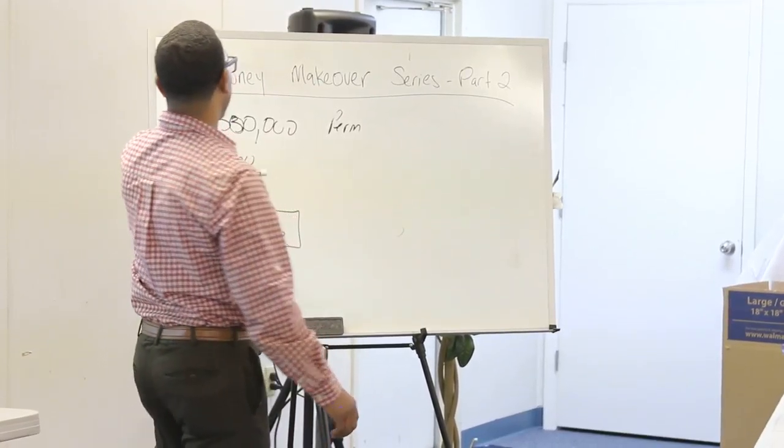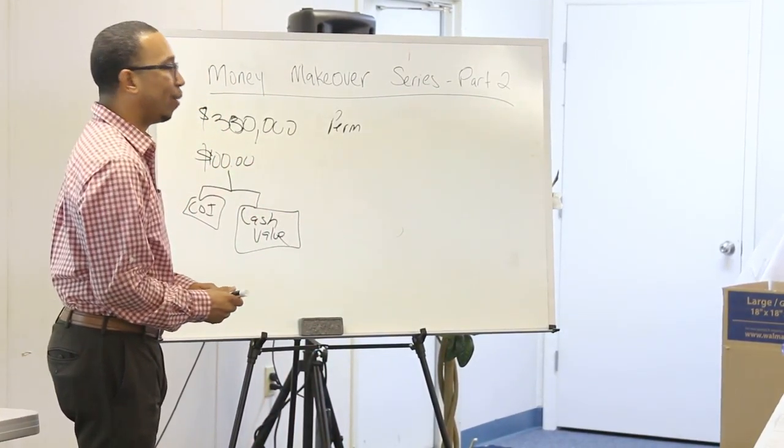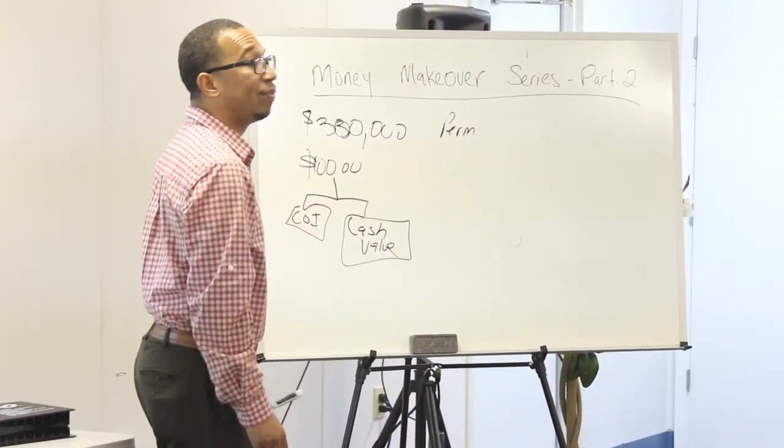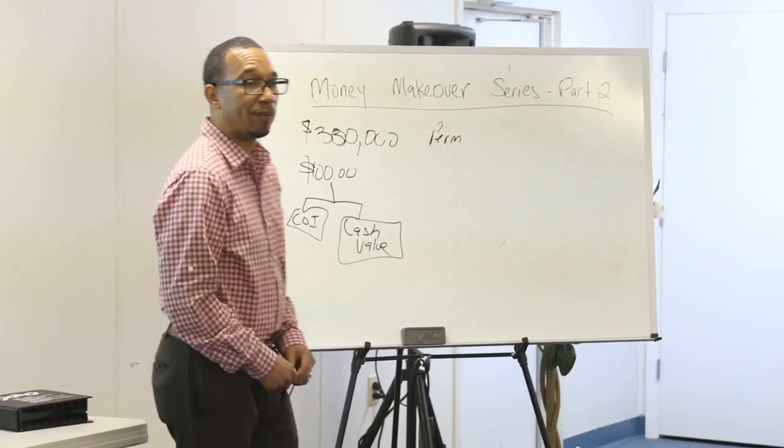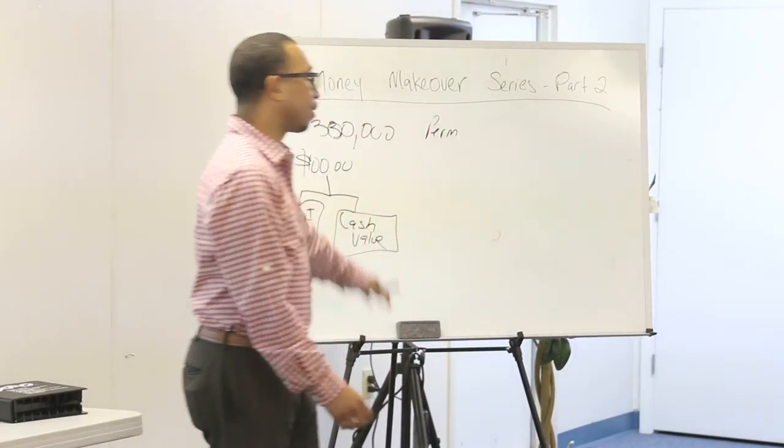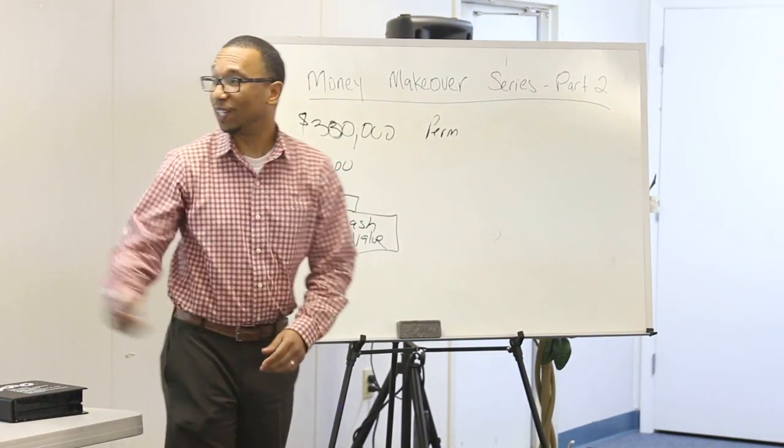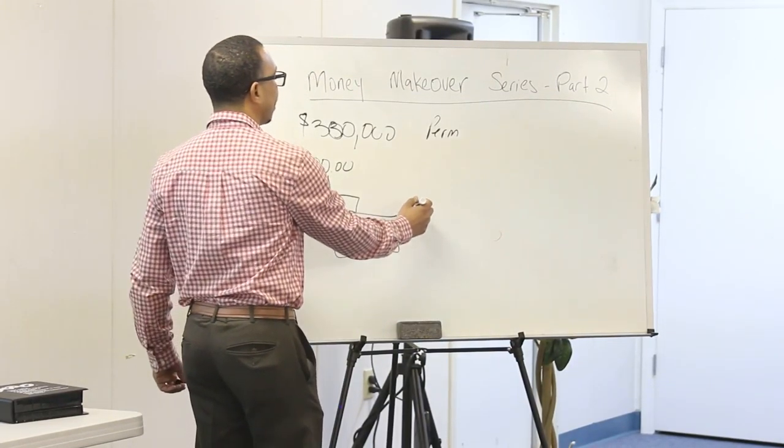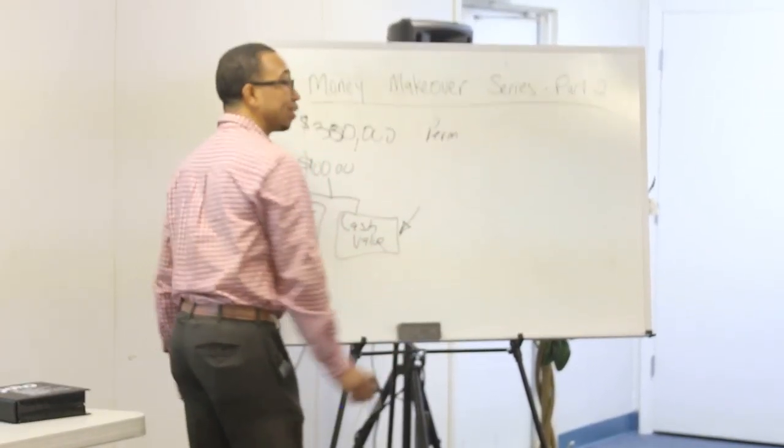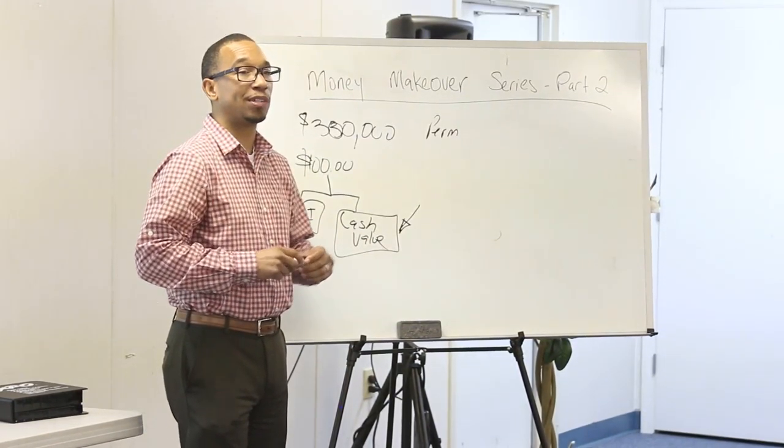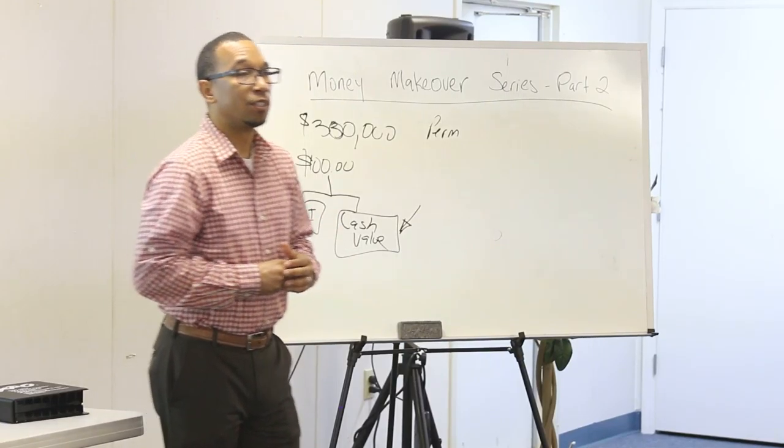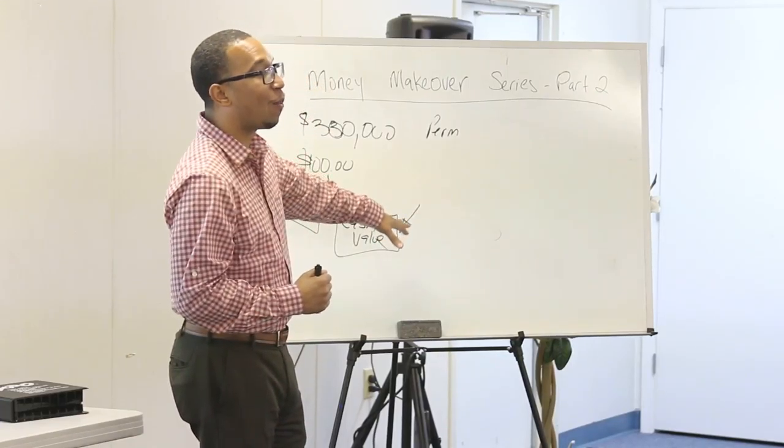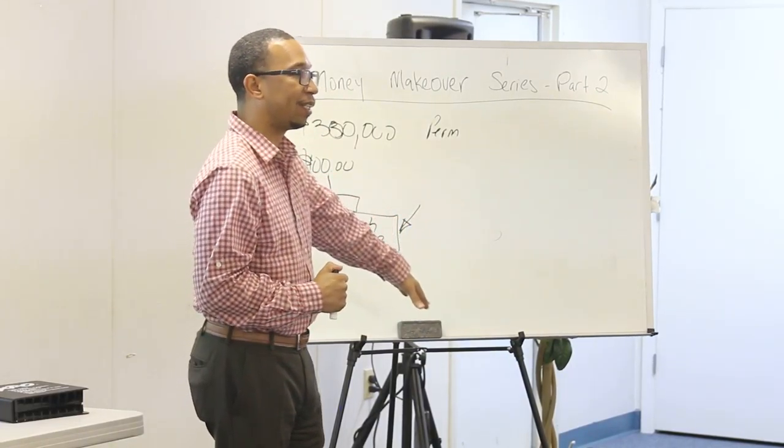Let's say, for instance, we're chopping up this $100 here. And we say, let's just keep the math easy. Let's say we cut it 50-50. $50 goes to pay for the cost of insurance. $50 goes to the cash value account. Depending on what type of permanent policy you have, this cash value account gets credited some type of interest on top of it.